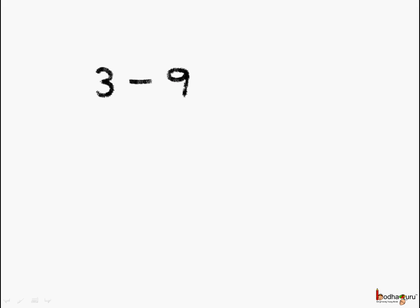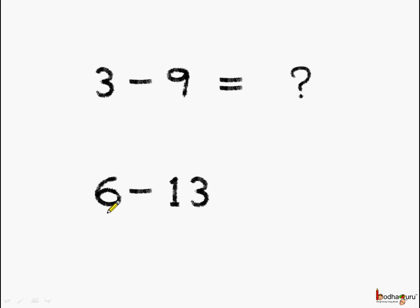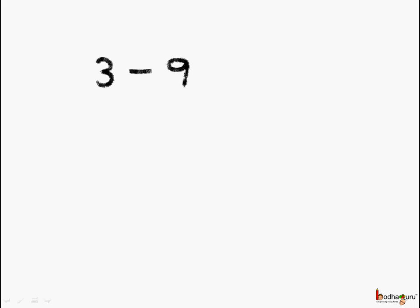But if we see, what is 3 minus 9? 3 and 9 are both whole numbers. What is it equal to? Also, what is 6 minus 13 equal to? Are they whole numbers? Let us see. 3 minus 9 is equal to minus 6.